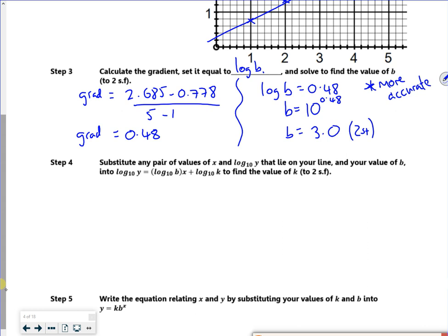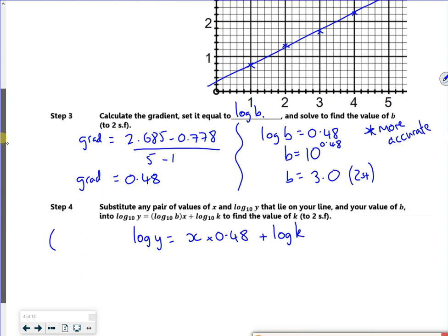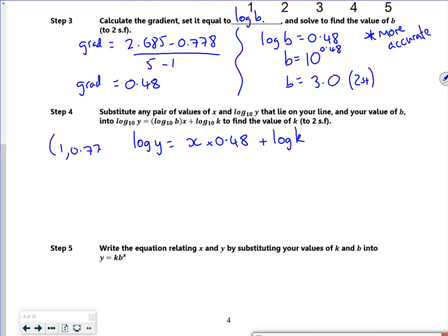I haven't got time in the time I've got to do it to actually do it. So that gets me a b value right then. So now I've got an equation which is log y is x times by 0.48 plus log k. There. So that's following that equation before that we had, for the straight line. So if I choose a coordinate point, so if I go with 1 and 0.778, I'm just realizing we've run out of time as well. Thank God.